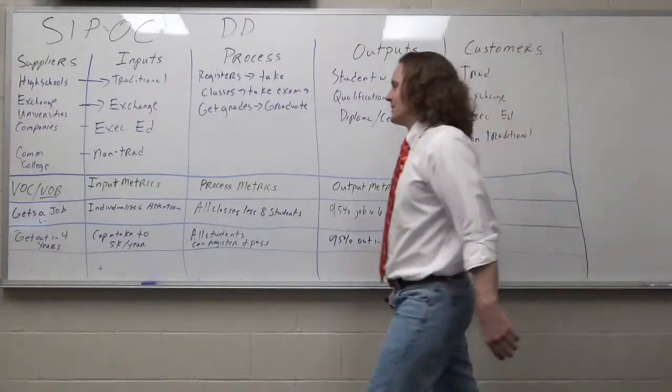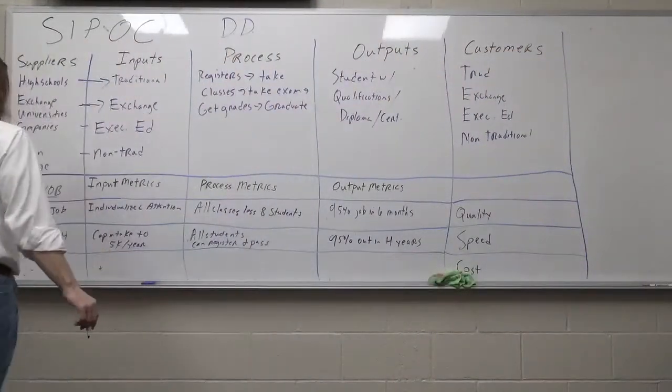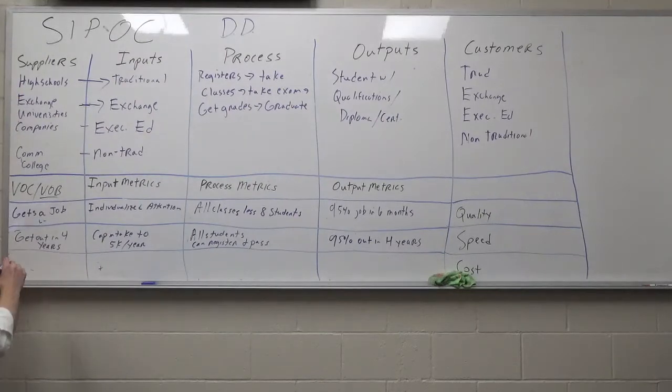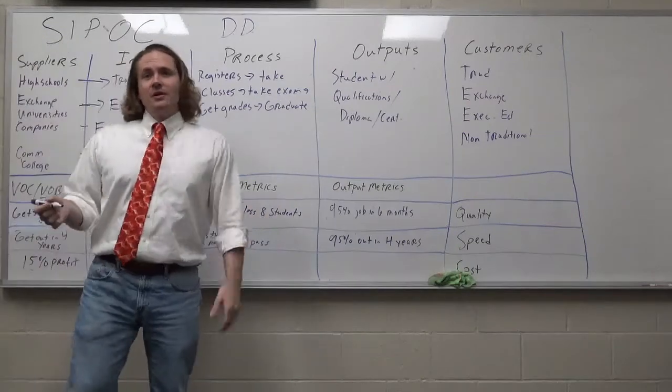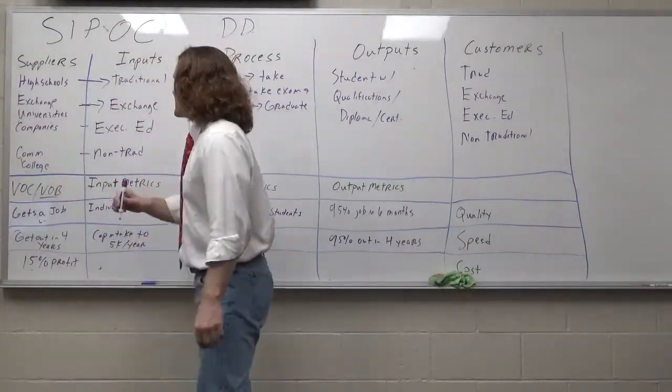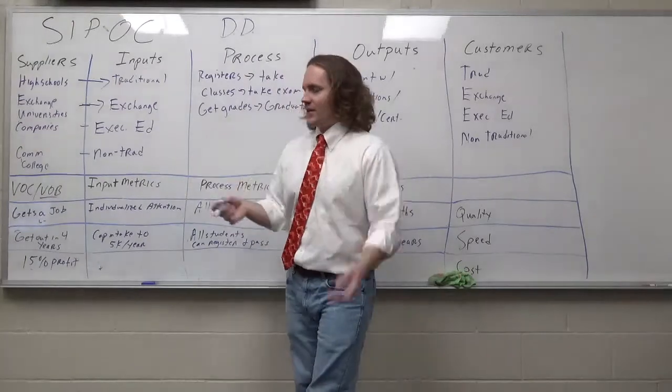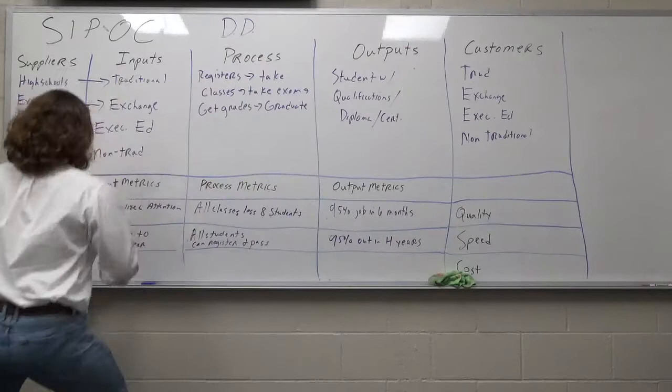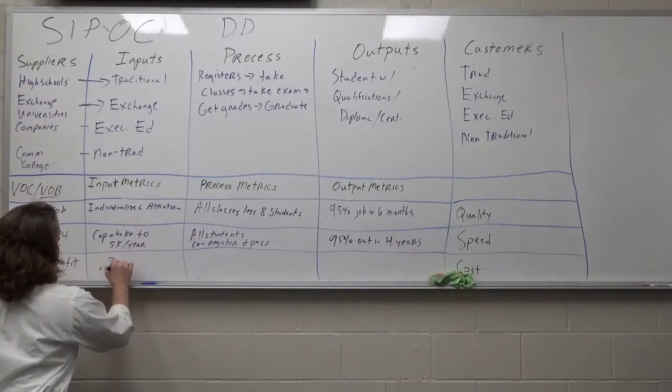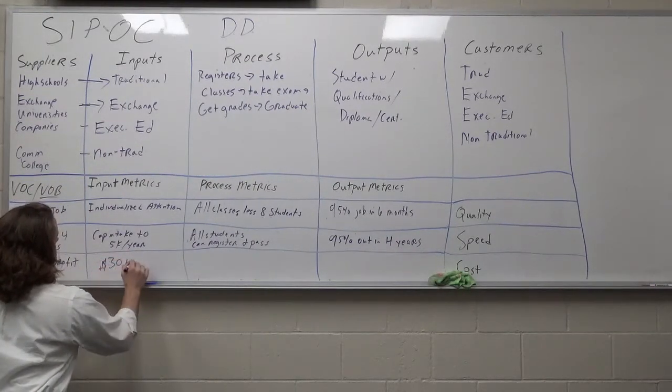Okay, cost. Let's say the university, in order to sustain itself, needs to make 15% profit. The input metric, so voice of business, the university needs to make 15% profit in order to continue its growth. The input metric might be you need to charge a certain amount of tuition per year. Maybe it's 30,000 a year tuition.